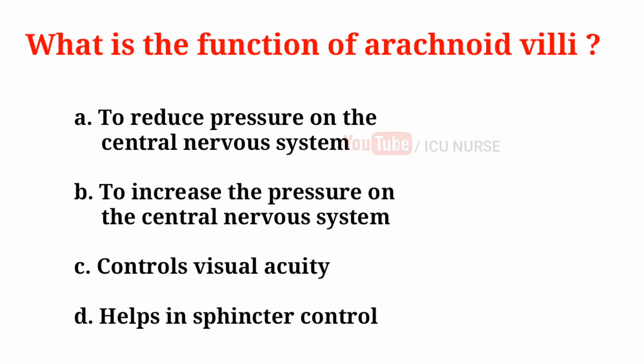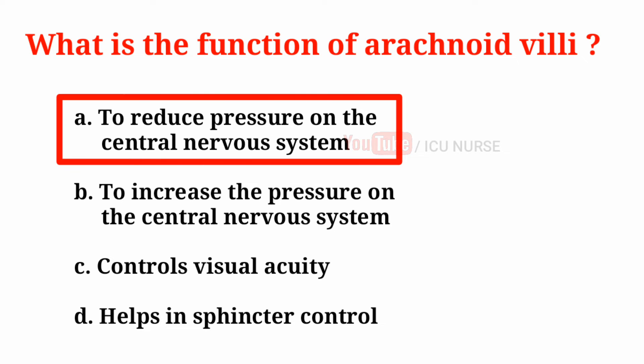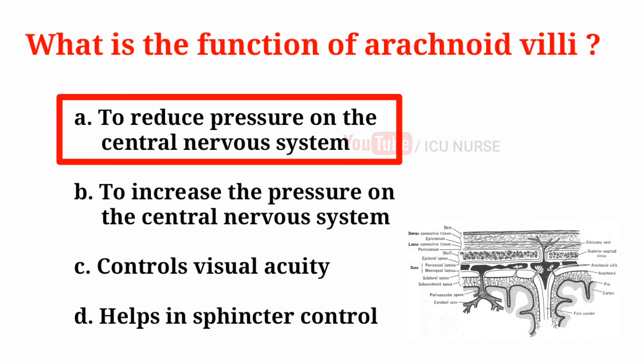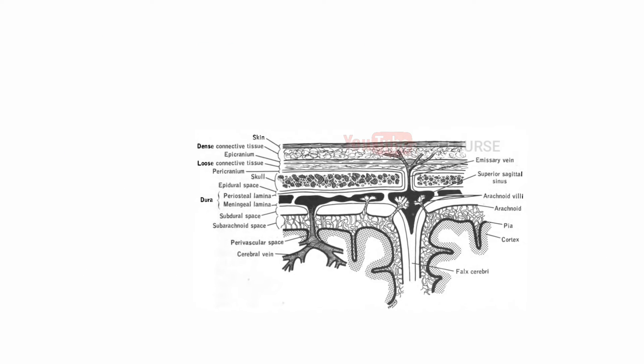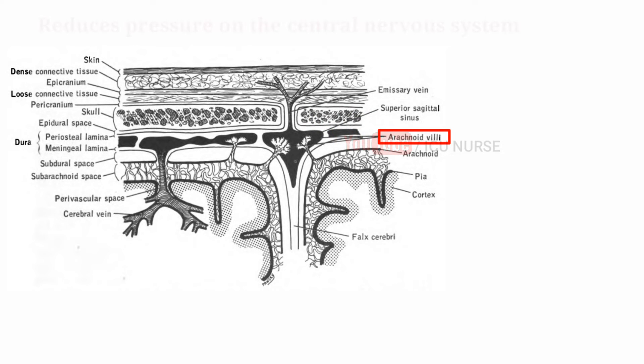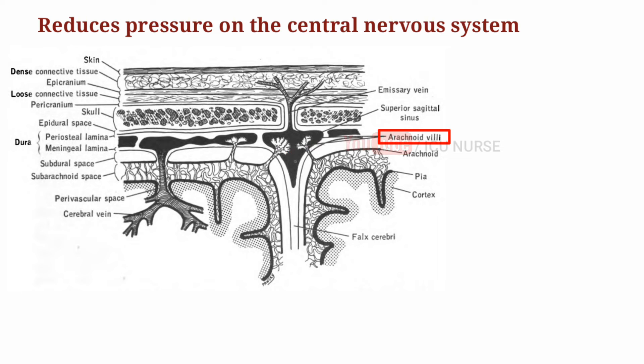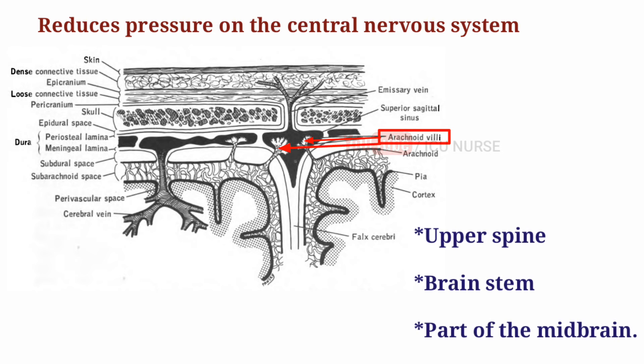What is the function of arachnoid villi? A. To reduce pressure on the central nervous system, B. To increase pressure on the central nervous system, C. Controls visual acuity, D. Helps in sphincter control. The correct answer is A. To reduce pressure on the central nervous system. The function of arachnoid villi is to reduce pressure on the CNS, particularly in the areas of the upper spine, brain stem, and part of the midbrain.